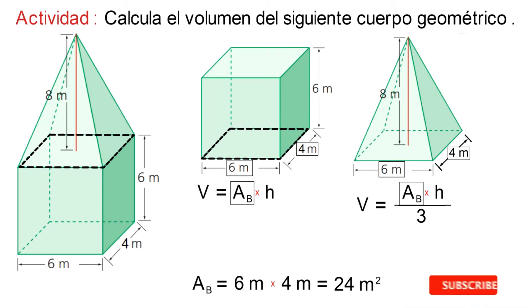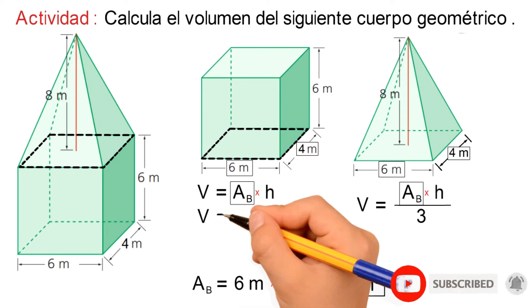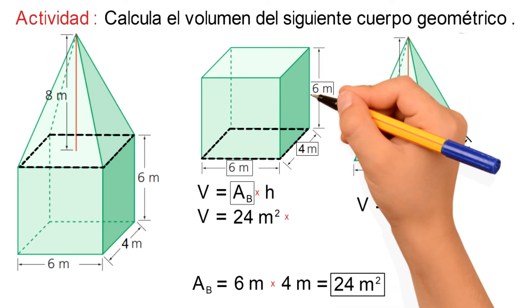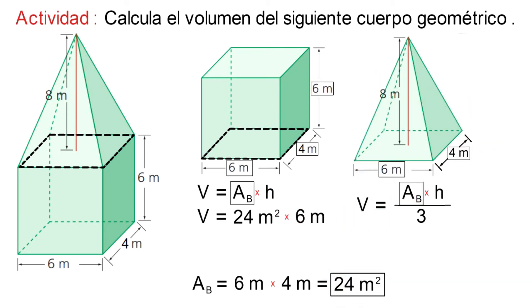Luego, reemplazando este resultado en la fórmula del volumen del prisma, tenemos que va a ser igual a 24 metros al cuadrado multiplicado por su altura de 6 metros. Y resolviendo la operación, esto nos va a ser igual a 144 metros cúbicos.